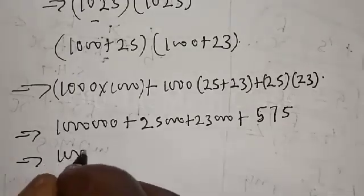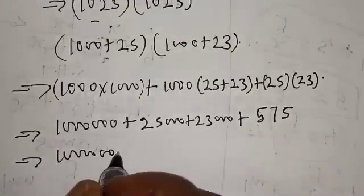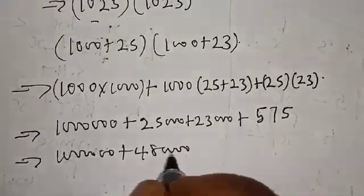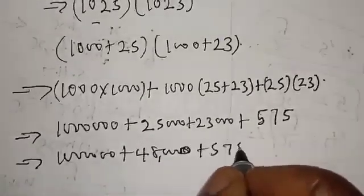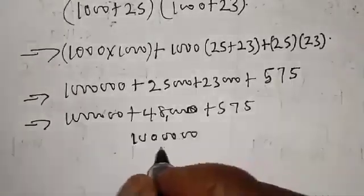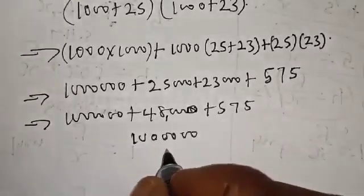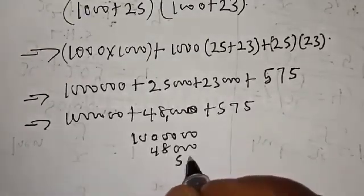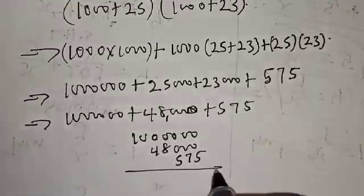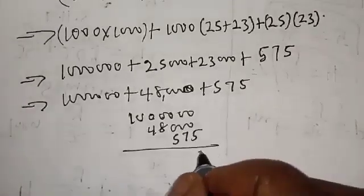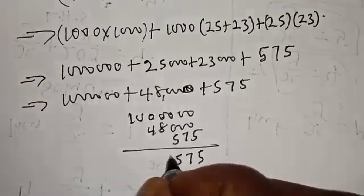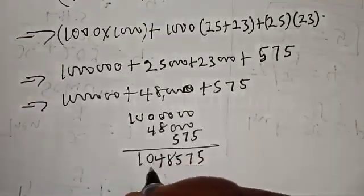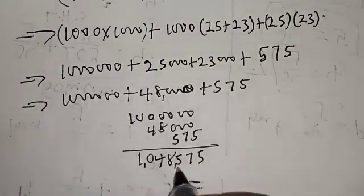This gives us one million, plus 48,000, plus 575. Adding everything together we have: 1,048,575. Therefore our final answer is one million and forty-eight thousand five hundred and seventy-five.